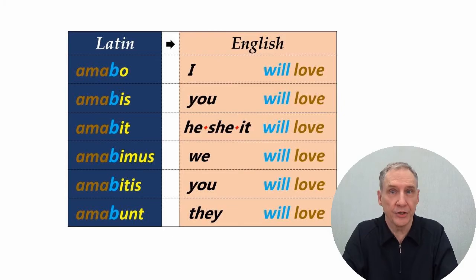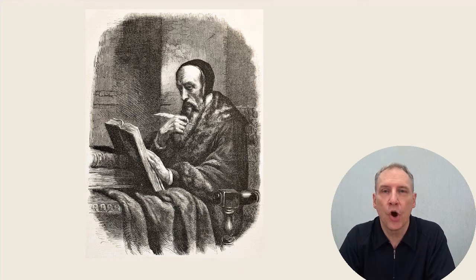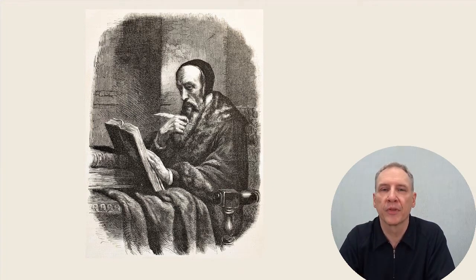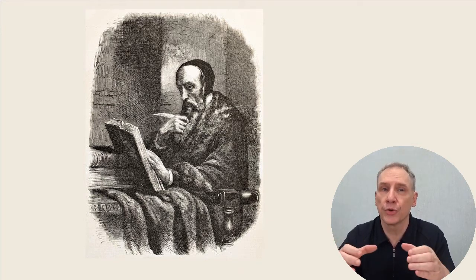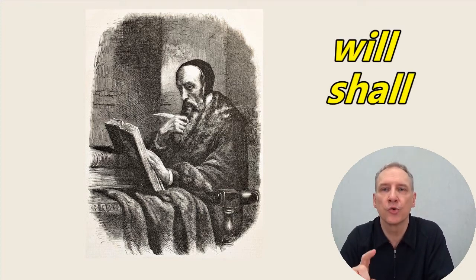So what to do? The early English grammar books were modeled after Latin over 400 years ago. And because Latin was the language of Western learning and culture, English grammar had to be forced to fit into this Latin model. As a result, they chose the little words 'will' and 'shall' to express Latin future. Unfortunately, will and shall do not really have future meaning.